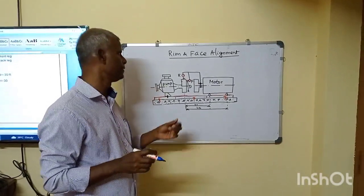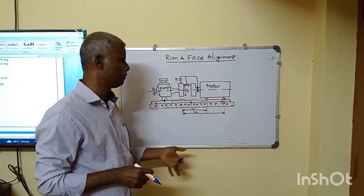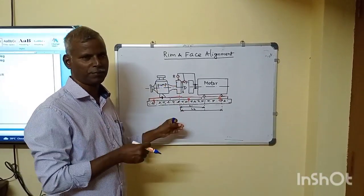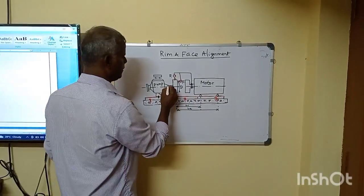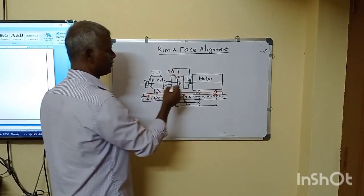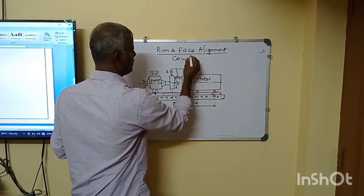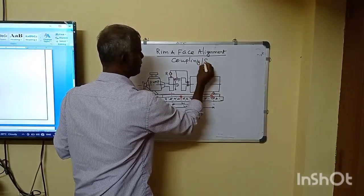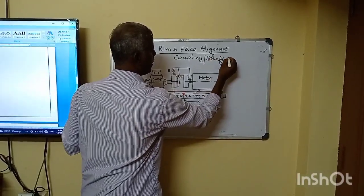This is a trim and case alignment. The trim and case alignment is a soft alignment. This is a pump and it is a coupling alignment.